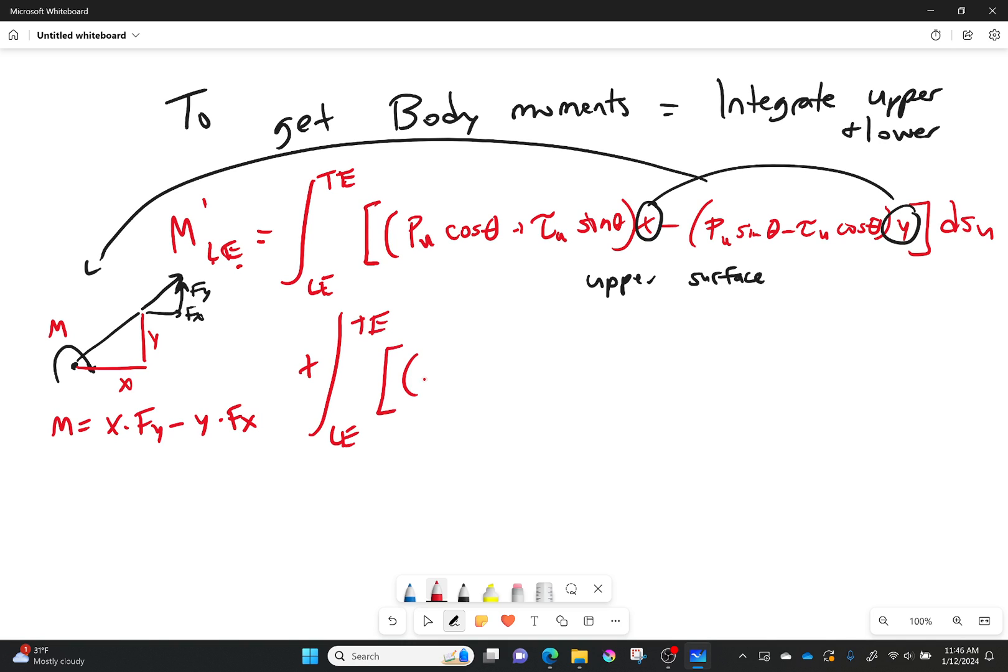And we're going to have negative the pressure in the lower surface now times cos θ, the angle with the flow between the flow and this particular panel, plus the shear stress on the lower surface times sin θ. Once again we're bringing in the x and the y.